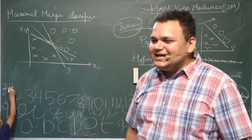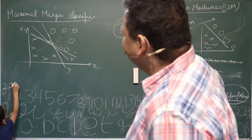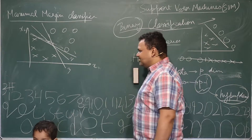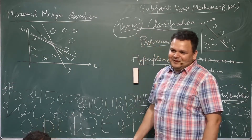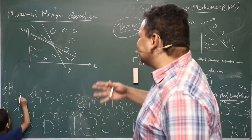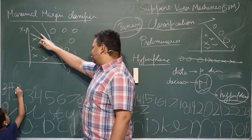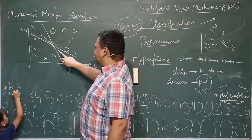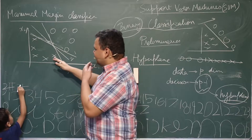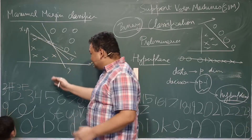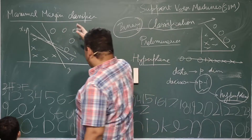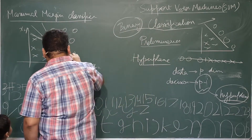Which one do you think is the most appropriate, logically speaking? Line 2. Line 2 appears to be the most appropriate because it has the maximum distance — the maximum distance from each of the training points. That is where the term maximal margin comes from.